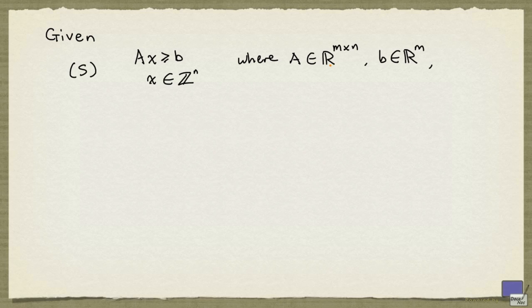And here, A is an m by n matrix, b is an m-tuple. If we have an m-tuple d with non-negative entries such that